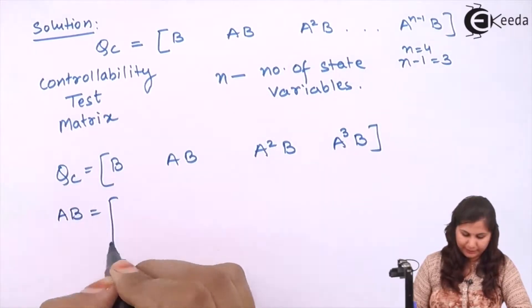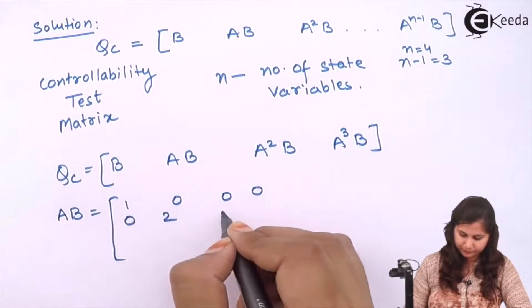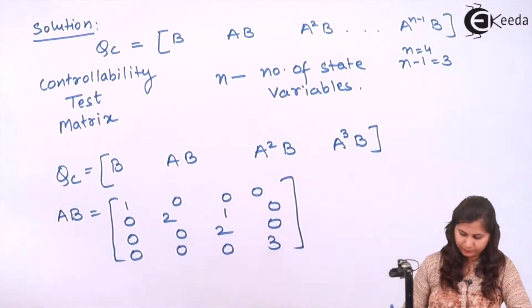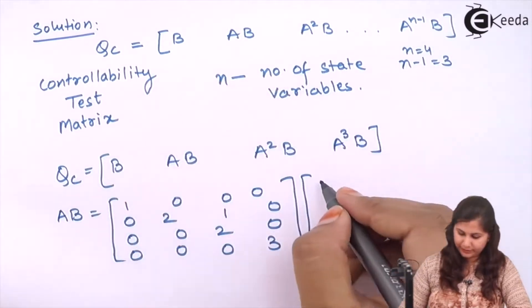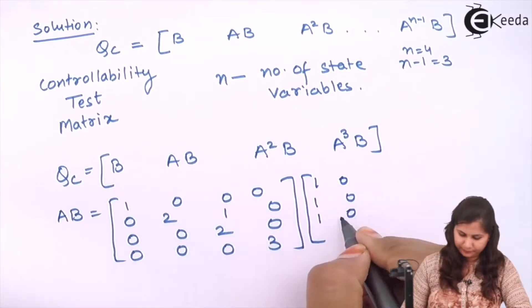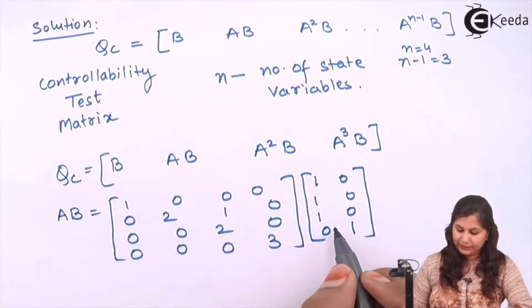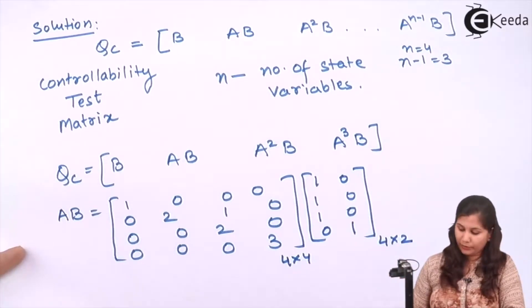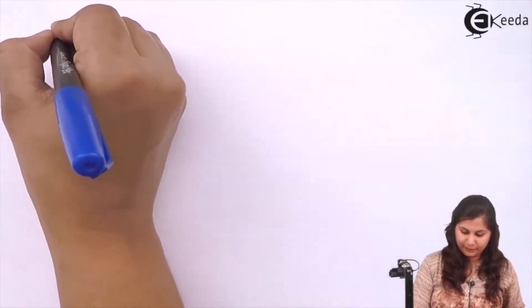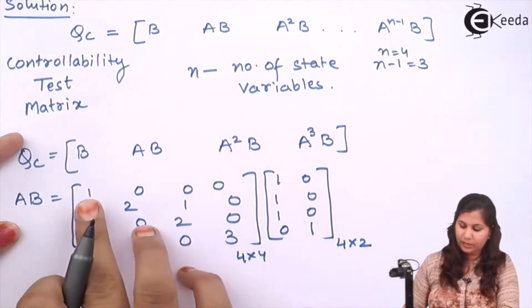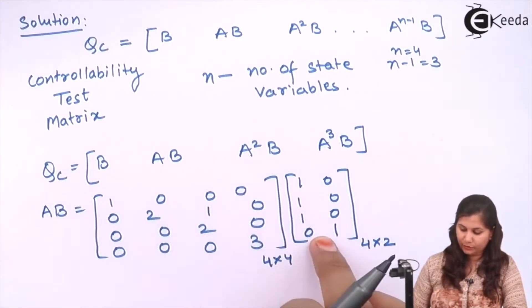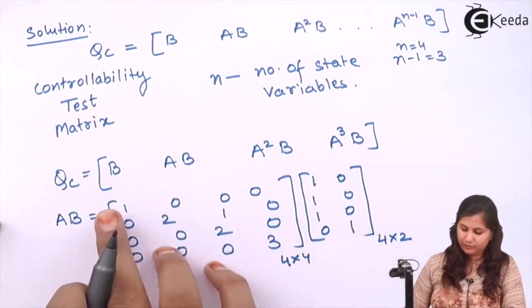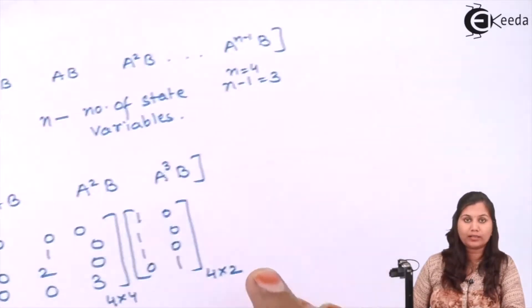AB will be the A matrix multiplied with the B matrix. This is a 4×4 matrix and B is 4×2, so we are going to get a 4×2 matrix for AB. For the first element: 1×1 then 0×0, 0×0, 0×0, giving us 1. For the first row second column: 1×0, 0×0, 0×0, 0×1, giving us 0.